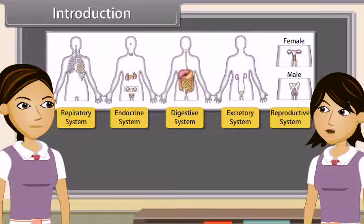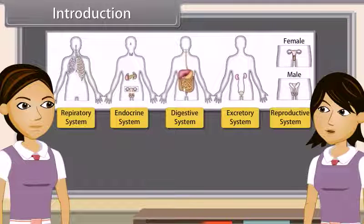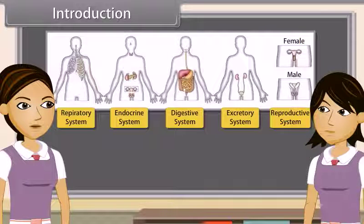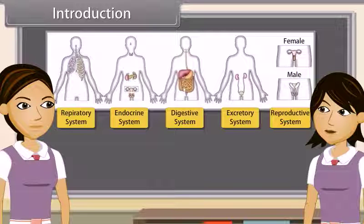Each system is specialized to do a specific function, such as nutrition, digestion, respiration, transport of materials, and excretion respectively. In each system, all the organs work together so that the whole system can work properly. In other words, all the organs of a system coordinate with each other so that the system can work properly.